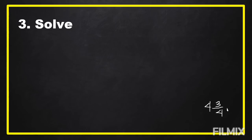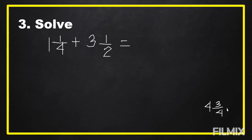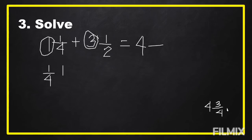The next step is we're going to carry out the plan, or we're going to solve. We're going to add one and one-fourth plus three and one-half. In adding mixed fractions, we're going to separate the whole number. We're going to add first one plus three, which equals four. Then we'll handle the fraction part, adding one-fourth plus one-half.